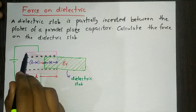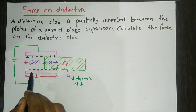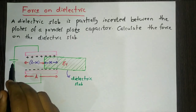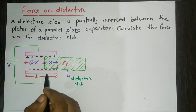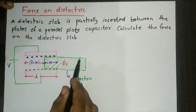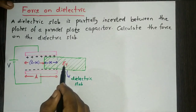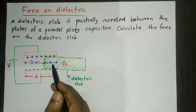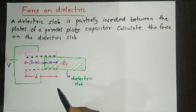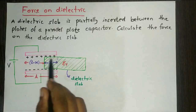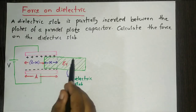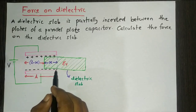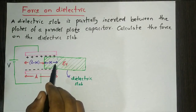This picture shows a parallel plate capacitor connected to a battery source. The potential difference is V. We insert a dielectric material having dielectric constant εr between the capacitor plates. We will see what is the effect of this introduction of the dielectric material.